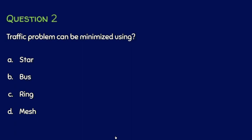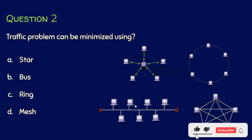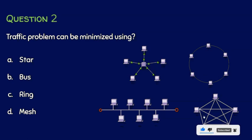Question number 2: Traffic problems can be minimized using A. Star, B. Bus, C. Ring, or D. Mesh topology. We have to identify which topology has minimal traffic. In star topology, all nodes send traffic to the central hub, so traffic is high at the central node — star topology is not the answer.